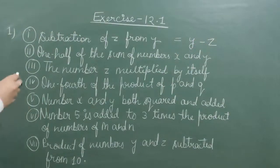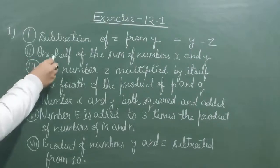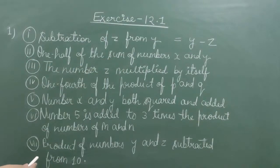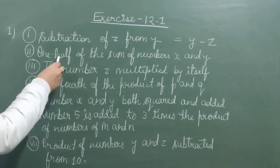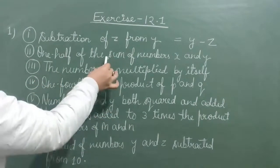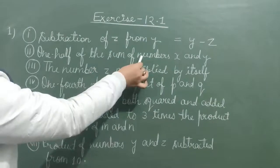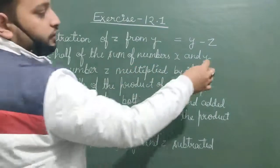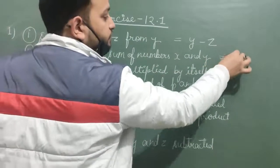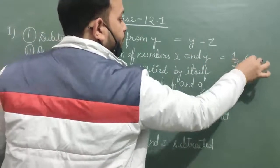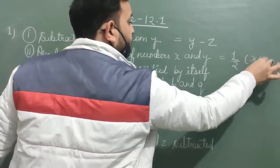Second: one half of the sum of numbers x and y. One half means 1 upon 2. So 1 upon 2 of the sum of x and y gives us the expression 1 upon 2 multiplied by (x plus y).